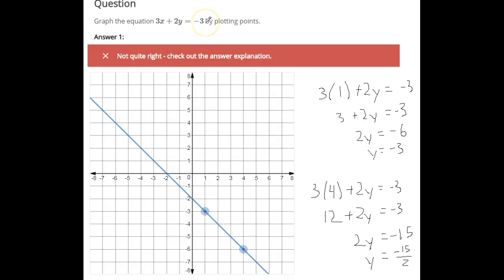We want to graph an equation here by plotting points, and what that means is we're just going to plug in any value at all that we want for x, and then do the algebra and solve and see what the corresponding y value would be. And I actually have a wrong solution here, and I'll work through and show how we can get the right solution.